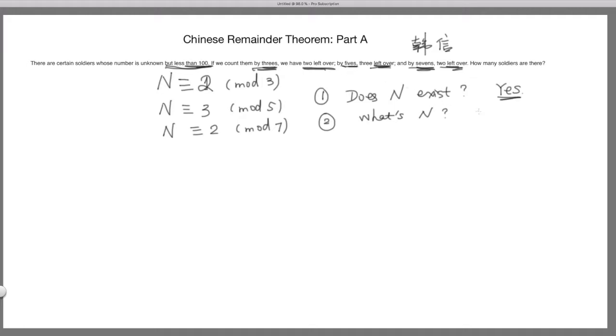Because you see once you find n, then n plus three times five times seven is going to be another solution. Because three times five times seven, when you divide by three, divide by five, or divide by seven, it's all going to have modulo zero. So if n is a solution, this is always also another solution. So here we're interested in what is the smallest n.